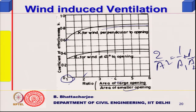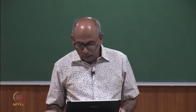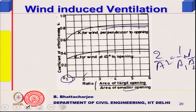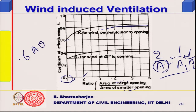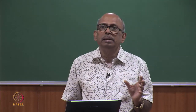When you take the smaller opening area with these coefficients, you need not worry about the coefficient separately. Calculate an equivalent area and use 0.6 times equivalent area times velocity. SP 41 also provides a curve for the 45-degree case where the value is 0.3. This gives you the flow due to wind as the driving force.